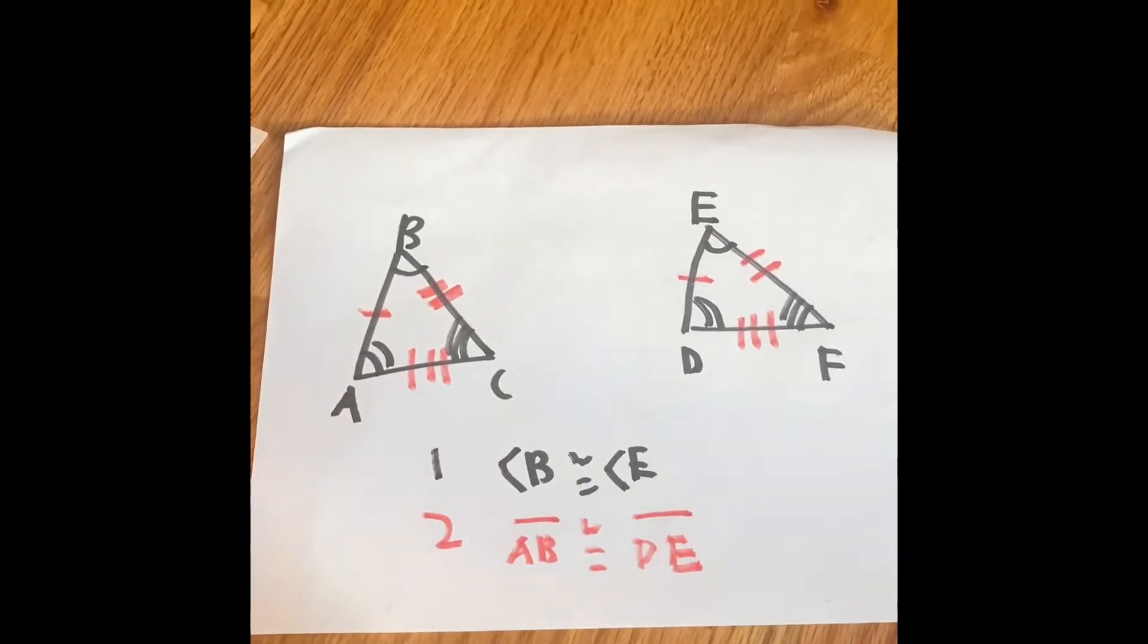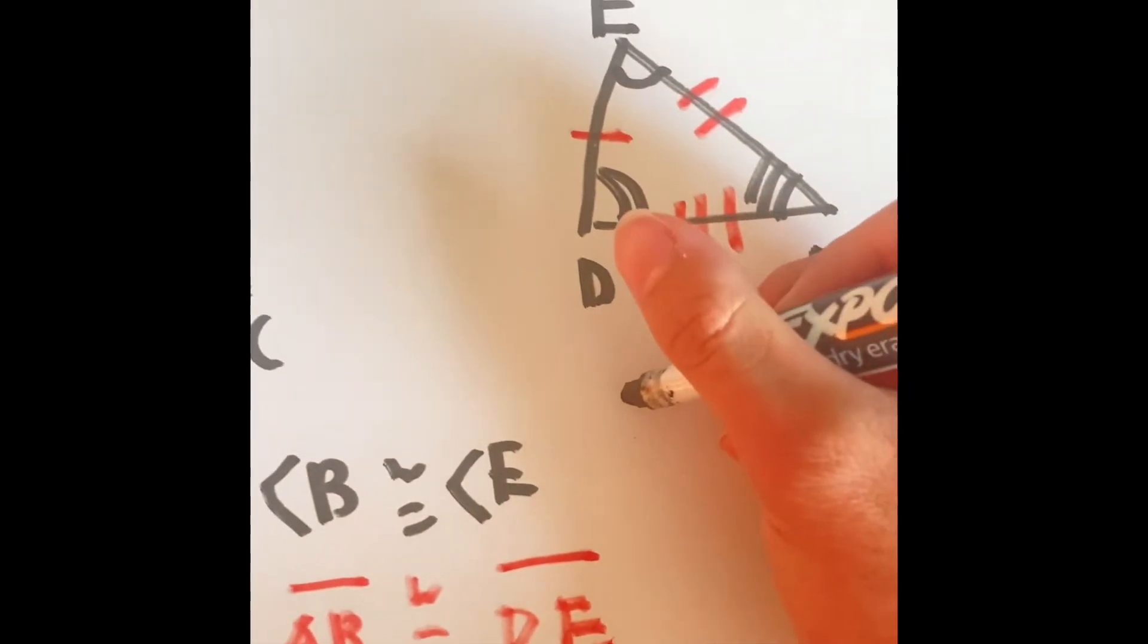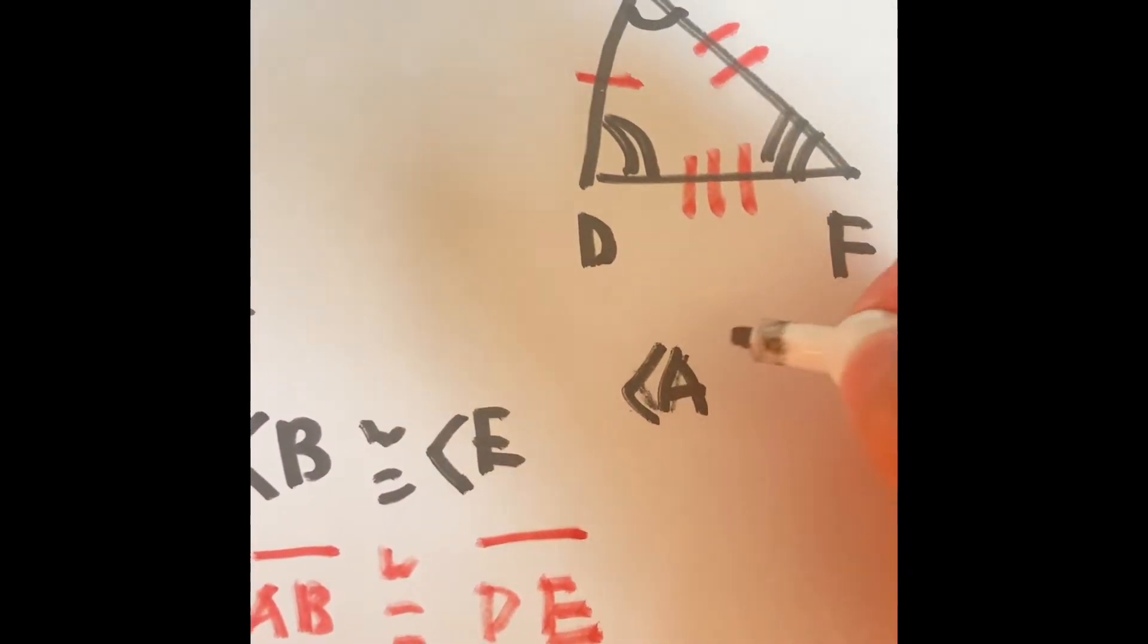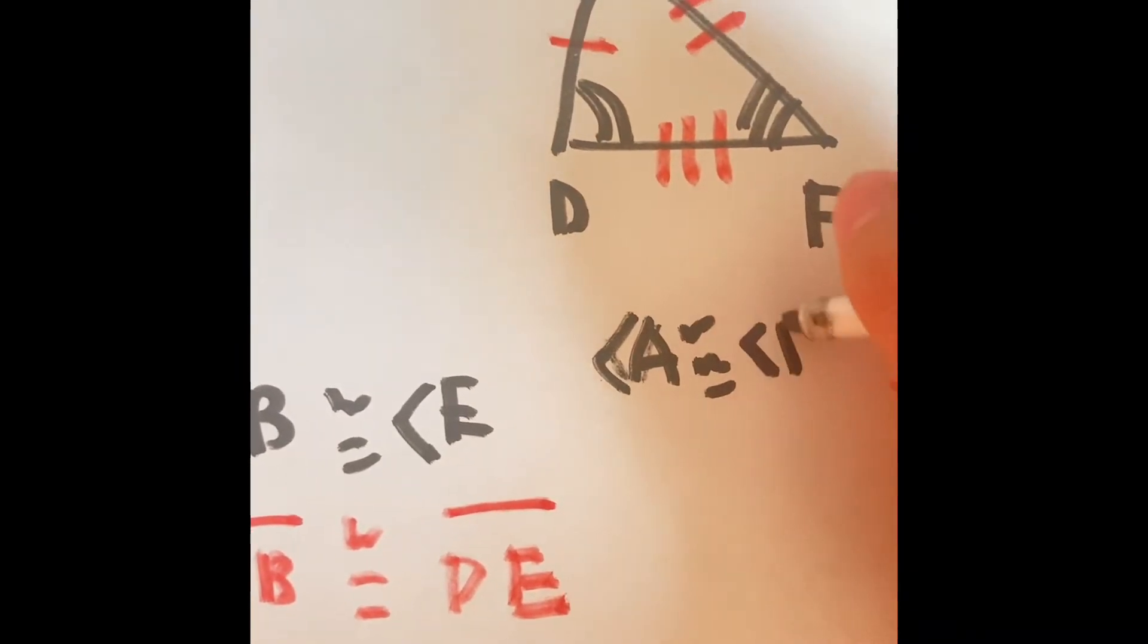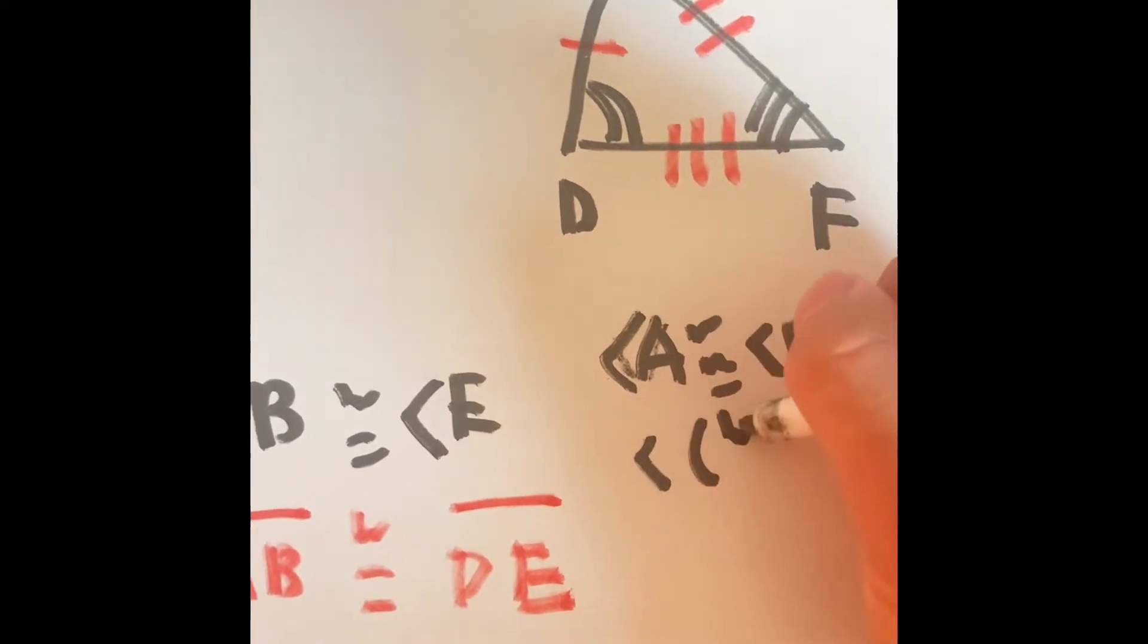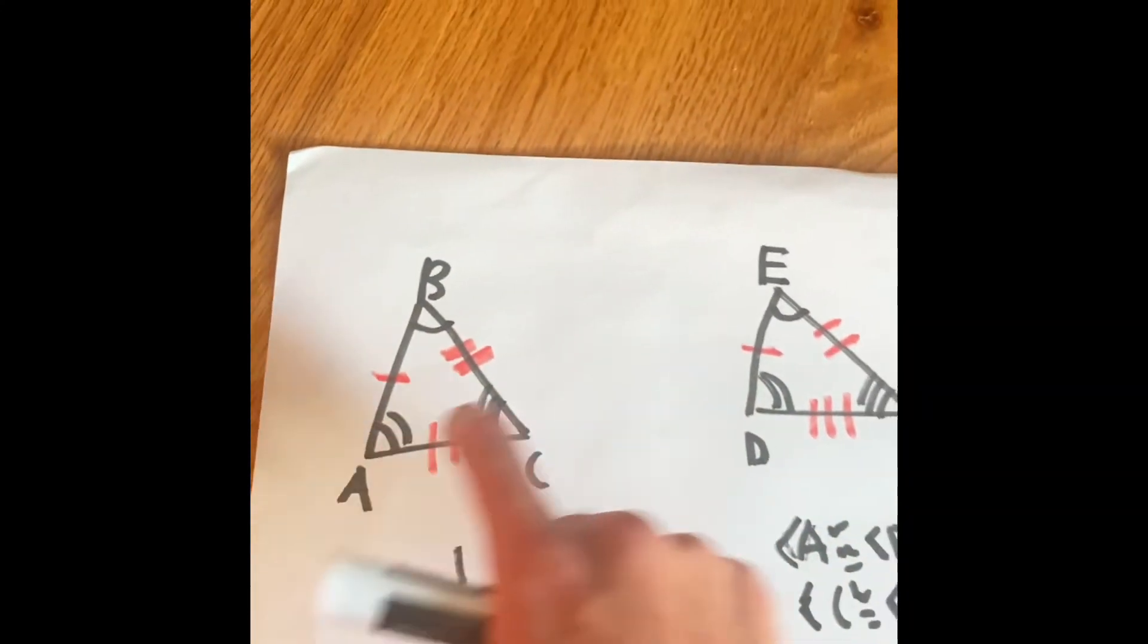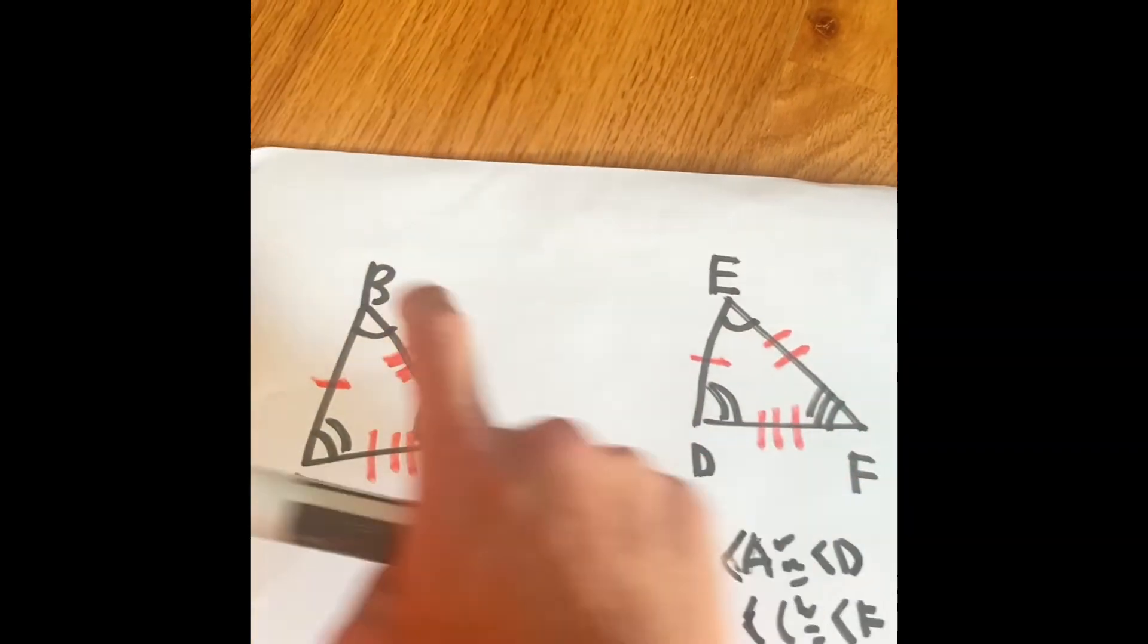For the angles, we're going to be using black. We can also say that angle A is going to be congruent with angle D. Angle C is going to be congruent with angle F. So A, D, C, F, and B, E.